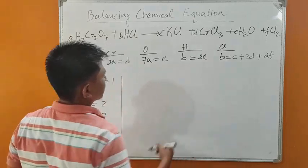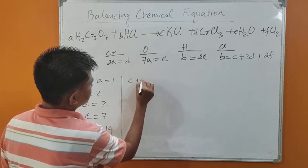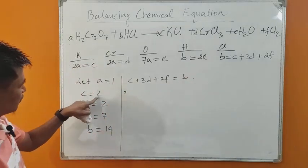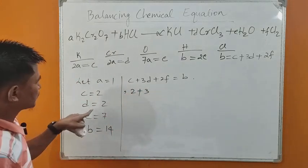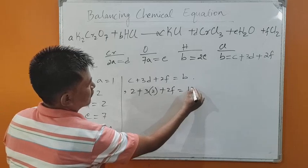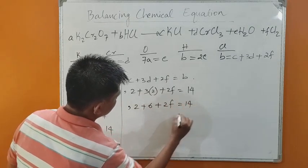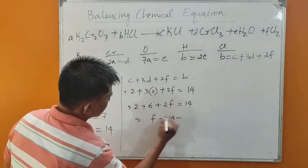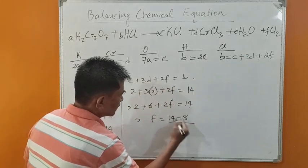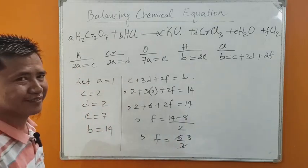Now, from the chlorine equation, we find the value of F. We have C plus 3D plus 2F equal to B. So: 2 plus 3(2) plus 2F equals 14. That is 2 plus 6 plus 2F equals 14, so 2F equals 14 minus 8, giving 2F equals 6, and F equals 6 divided by 2, which is 3.